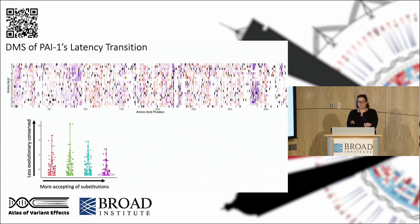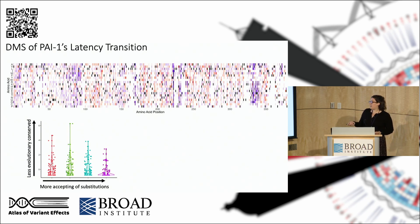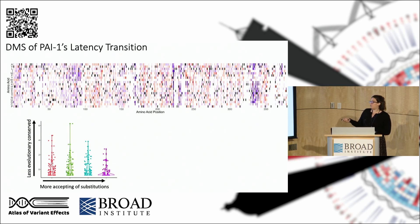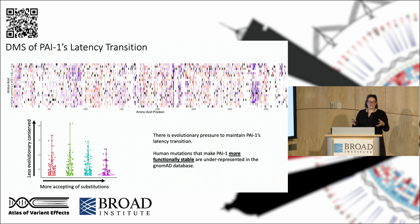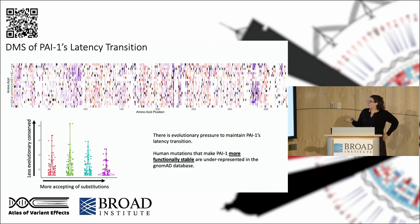We did the same conservation analysis for latency and actually see the opposite trend from UPA. The regions in our screen that accepted the most mutations to make PAI-1 more functionally stable were sites where residues are highly conserved across extant species. We assumed there's actually evolutionary pressure to maintain that latency transition — hypothesizing that it exists to clear pathological effects of active PAI-1 — but we don't really know what the latency transition is for. Again, looking at gnomAD, human mutations that make PAI-1 more functionally stable are also underrepresented.